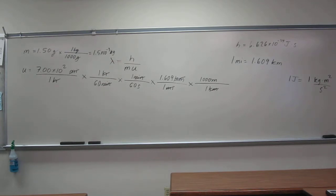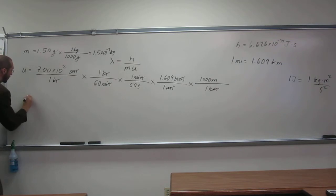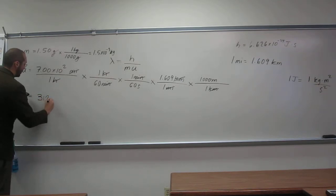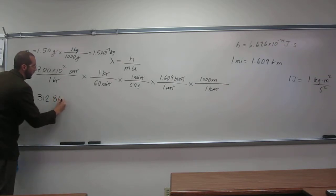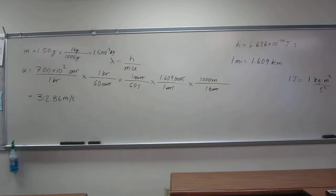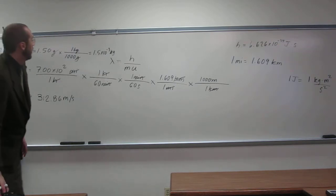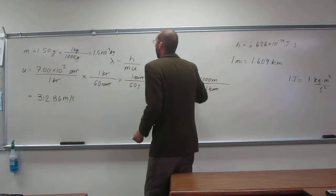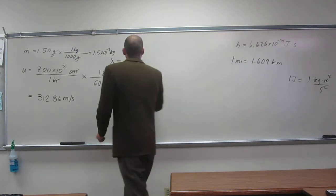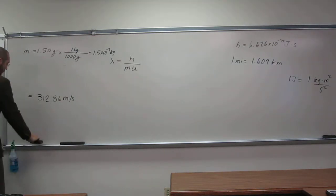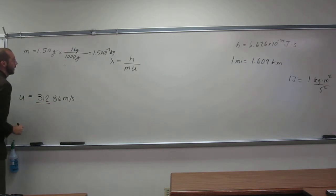So 700 divided by 60, divided by 60, times 1.609 times 1000. I get, so this is three sig figs. I'm going to keep it to a few more sig figs for right now and then just take the final answer to three sig figs: 312.86 meters per second. Is everybody okay? I'm going to erase this conversion here. Remember, that's only the three sig figs.